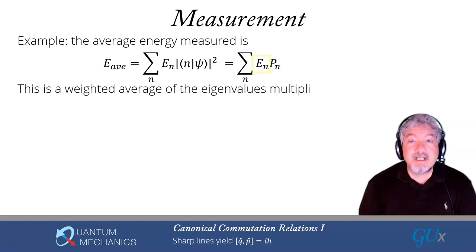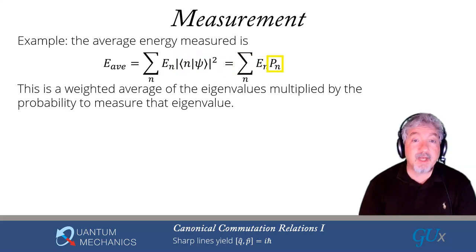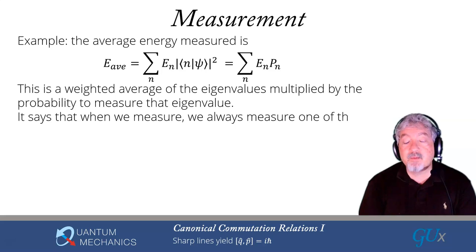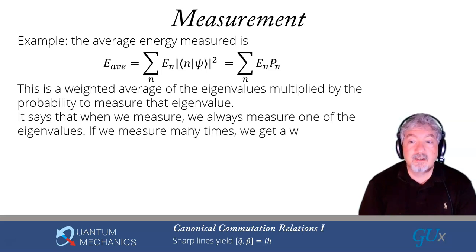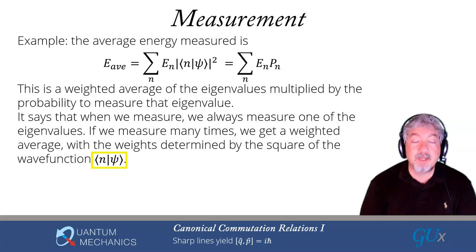So the average energy is a weighted average of the eigenvalues of the operator. That's the En's multiplied by the probability to measure that eigenvalue. So we're going to interpret this overlap of the energy eigenstate n with the state that I was prepared in psi modulus squared. We're going to interpret that as the probability to measure the eigenvalue n whose eigenvalue is equal to En. This says that whenever we measure something, we're always going to determine one of the eigenvalues. Again, we saw that when we were looking at the Rabi oscillations in one of your problem sets. If we measure many times, we're going to get a weighted average, and the weights are determined by the square of the wave function, which is given by this overlap of the energy eigenstate with the state that I prepared my system in, which is psi.